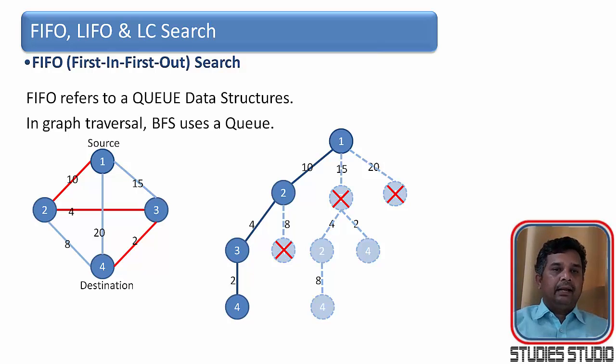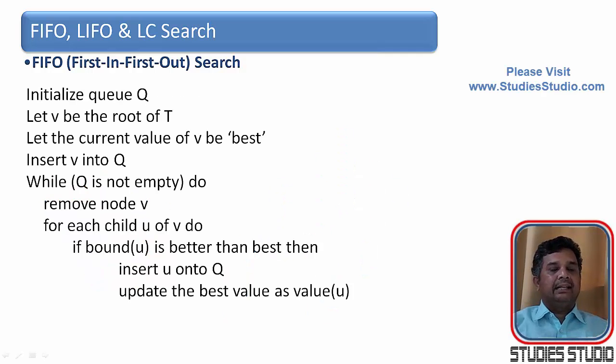So this is the tree that we will be getting by having the search using FIFO search. Now let us try to understand its algorithm. What we did here? We initialize a queue Q. Let us say V is the root of the tree. And let the current value of V is the best value. Then we will insert V into the Q. And while Q is not empty, I am going to do these works. I will be removing V. And for each child U of V, I will find the bound value of U. And if the bound value of U is better than the best solution, I will insert U into the Q. And I will update the best value of the Q.